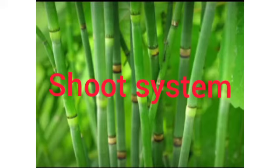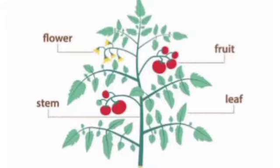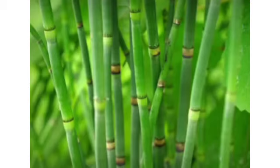Let's revise the shoot system. The part of a plant that grows above the soil comes under the shoot system. It includes stem, leaves, buds, fruits and seeds. First: the stem. The stem grows above the ground — it is the main part of the shoot.